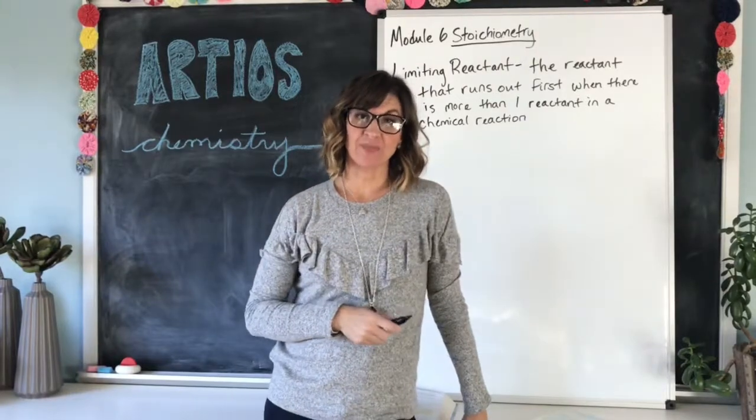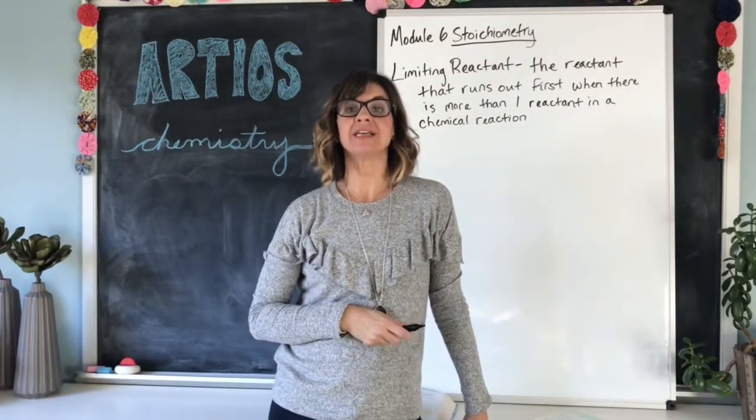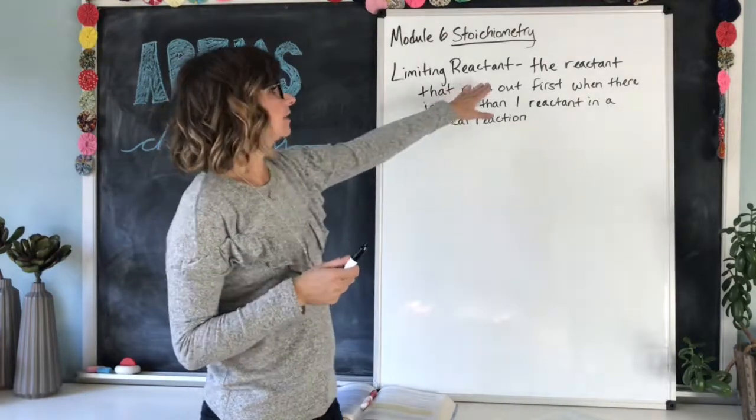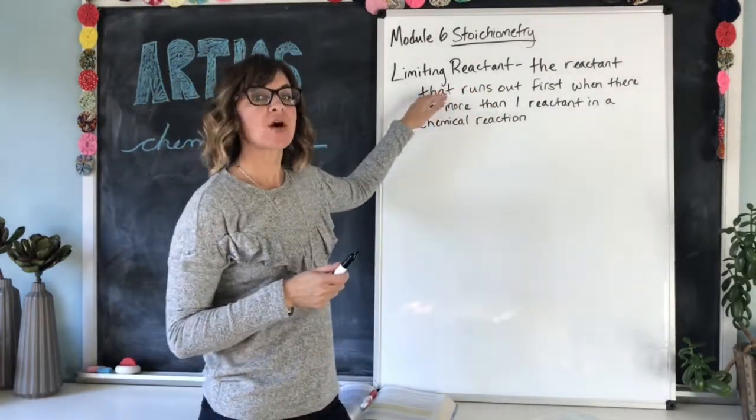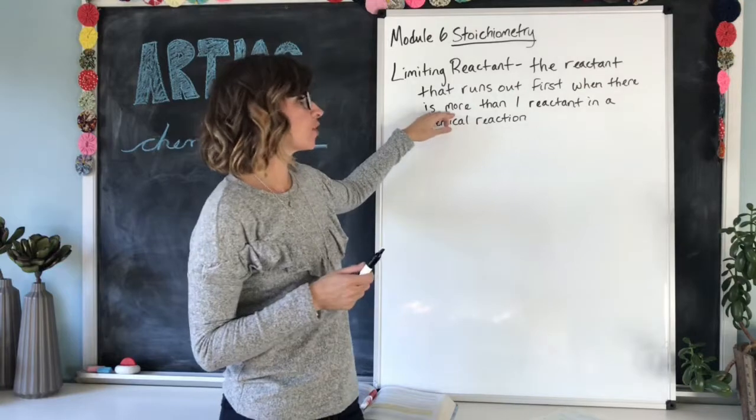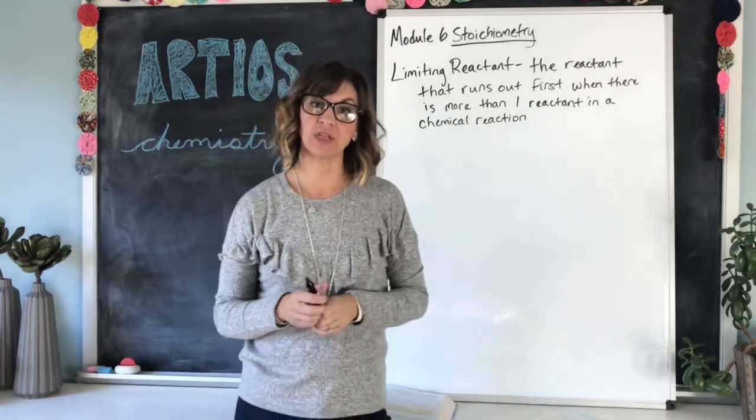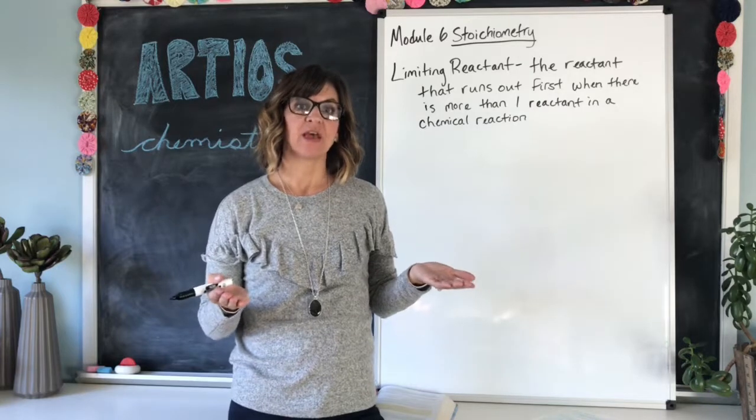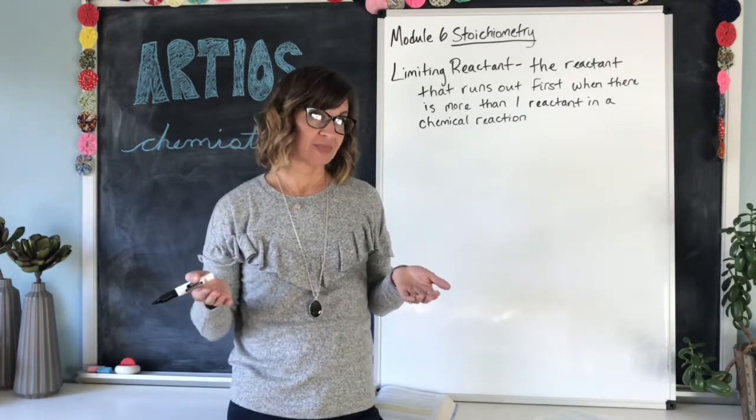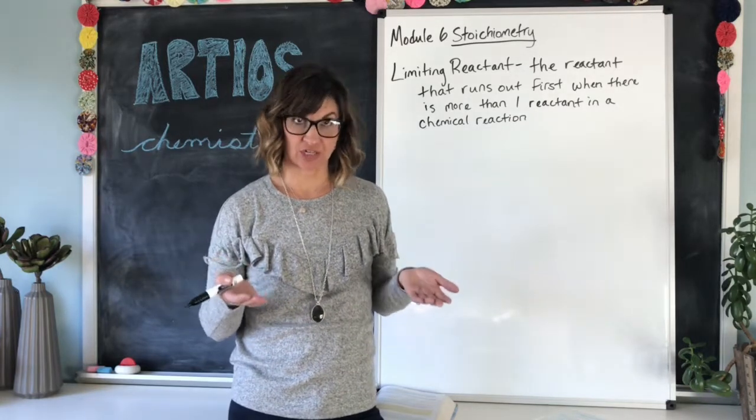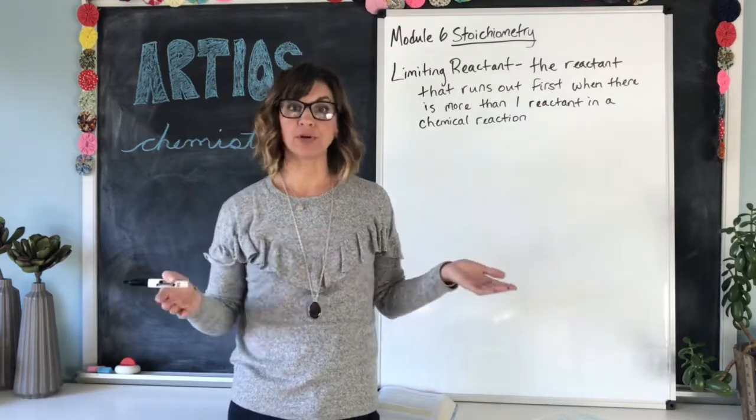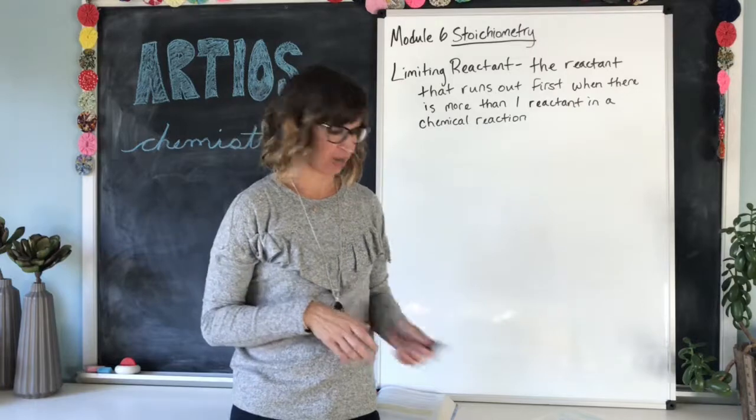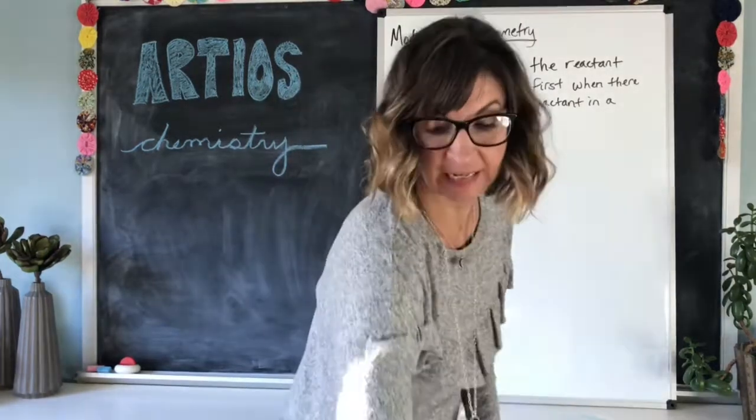The next thing we need to talk about when it comes to stoichiometry is limiting reactants. A limiting reactant is the reactant that runs out first when there is more than one reactant in a chemical reaction. So if you have two reactants, one may be left over at the end of the chemical reaction. You may not burn through all of the oxygen that's present, for example, in a combustion reaction. So I have a little example of that.